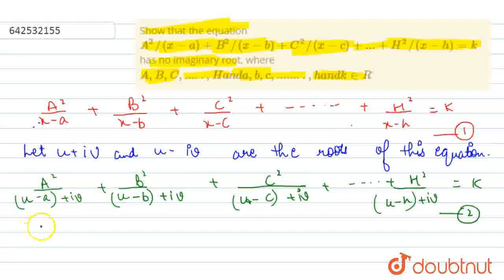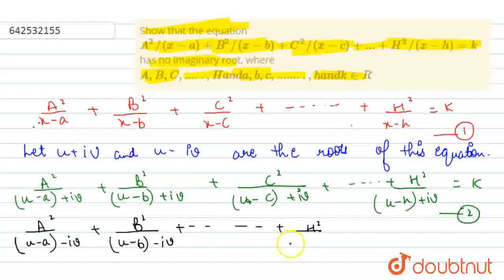Now, let us suppose another equation: a² / (u - a - ib) + b² / (u - b - ib) and so on, up to h² / (u - h - ib) = k. This is our third equation.